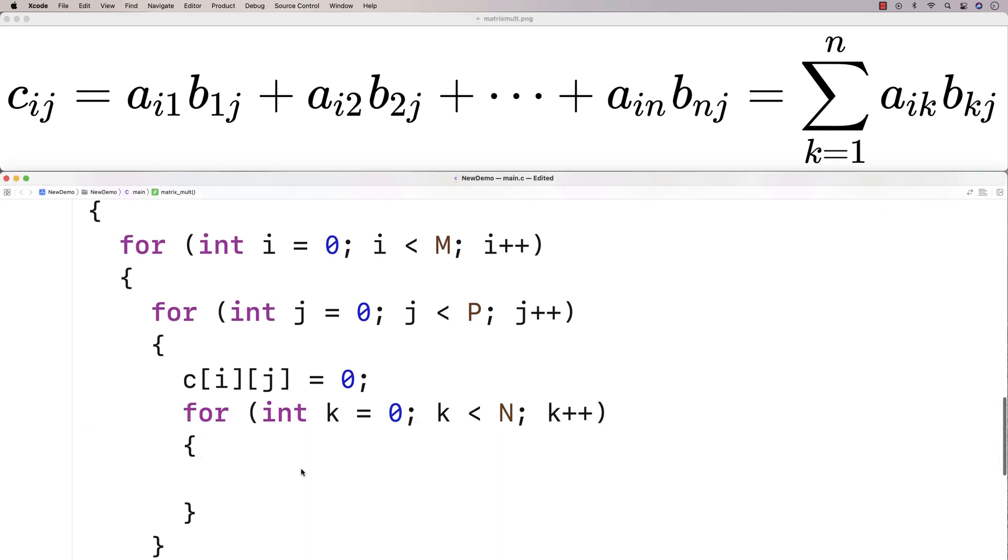So here we'll say C[i][j] += A[i][k] * B[k][j]. And this is the implementation of this equation here.